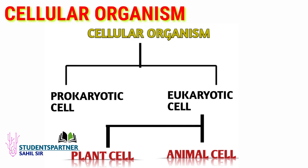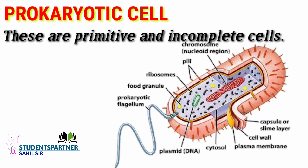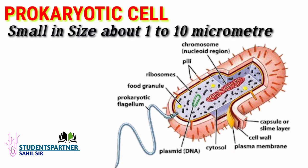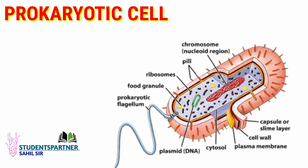Cellular organisms are divided into prokaryotic and eukaryotic. Prokaryotic cells are primitive and incomplete cells — they are not well-developed and not fully organized. As a result, all organelles are not found in them compared to eukaryotic cells. These cells are small in size — about 1 to 10 micrometers.